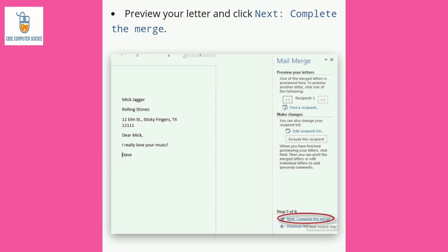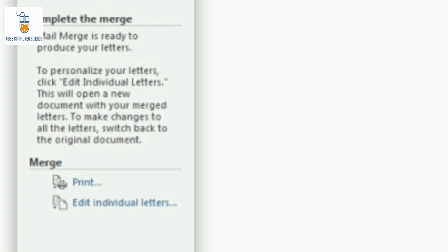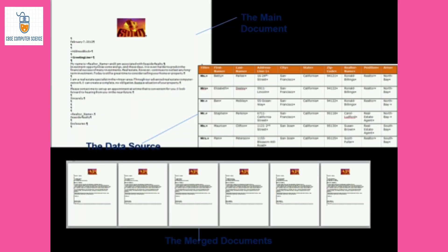In the Complete the Merge step we have two options: Print or Edit Individual Letters. To preview all the letters on one screen, click Edit Individual Letters to navigate through them before printing. Then click Print to print all the letters. The mail merge process consisted of three documents: the main document where you type the letter, the data source containing the recipient list, and the merged documents — multiple copies of the letter with different addresses imported from the recipient list. This is all about mail merge in MS Word. Hope you liked it, thank you for watching.